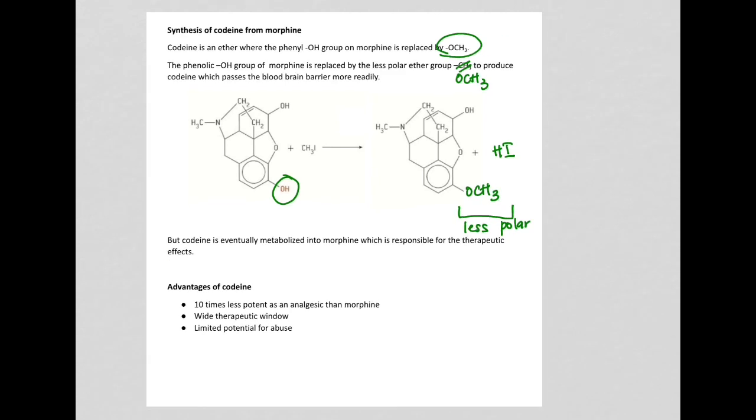However, the effectiveness of codeine is only one-tenth the strength of morphine. It's ten times less potent than morphine. Why is that so? Because when these opiates enter the brain, the opiates bind to endorphin receptors. Endorphin receptors are receptors that are associated with the feeling of pain.